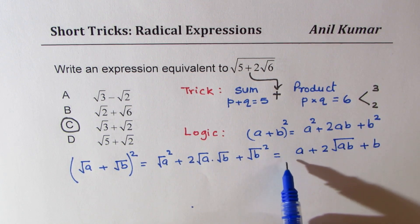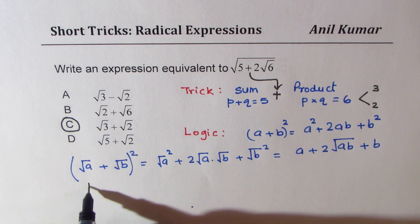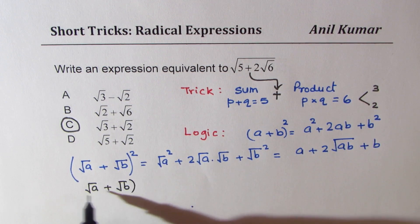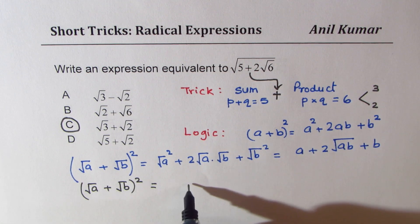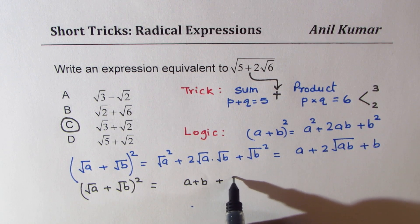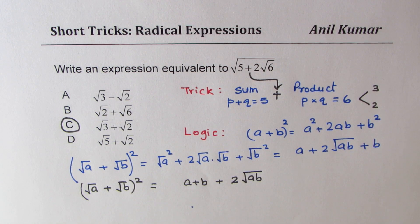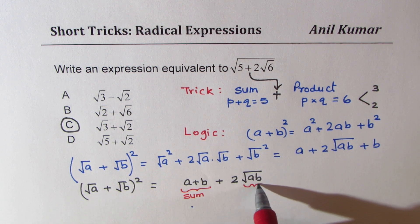Now this can be rearranged. So what we really get here is square root of A plus square root of B whole square equals A plus B plus twice square root of AB. So this is the sum part, and that is the product.